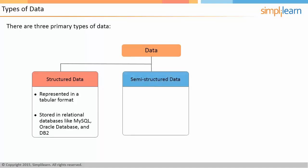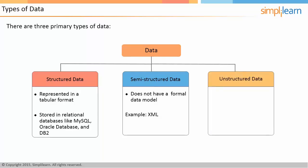The second type is semi-structured data, which doesn't have a formal data model, though it may have some semblance of a structure. For example, XML files represent semi-structured data. The third is unstructured data, which doesn't have a pre-defined data model. Text files, web logs, and machine logs are good examples of unstructured data.